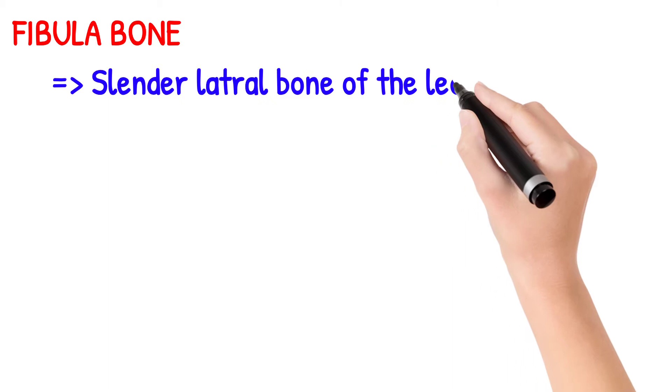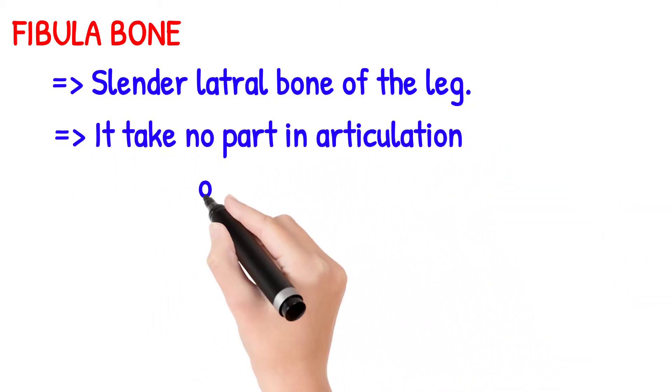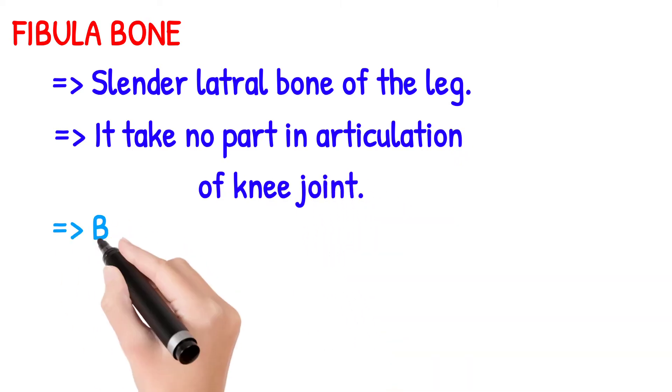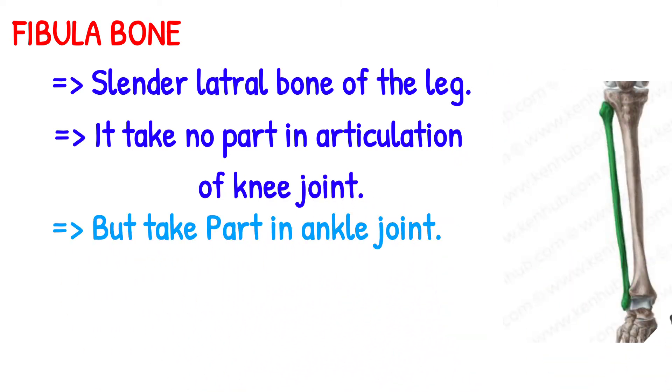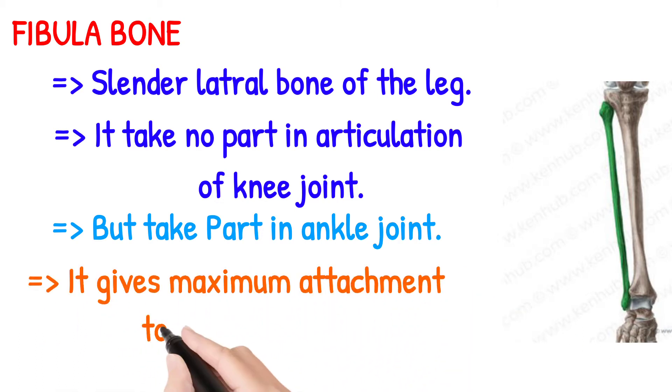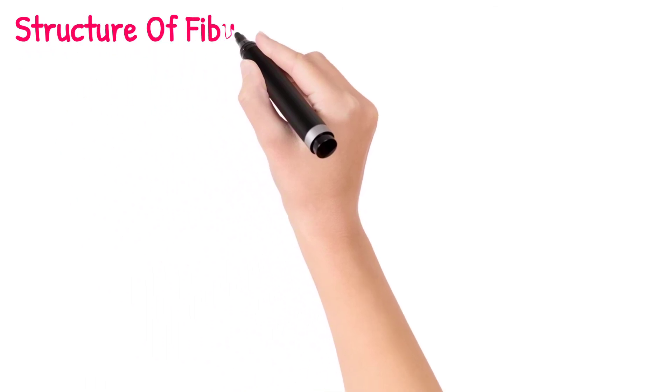The fibula bone is a slender lateral bone of the leg. It takes no part in articulation of the knee joint but takes part in the ankle joint. As you see in this picture, it gives maximum attachment to the muscle.